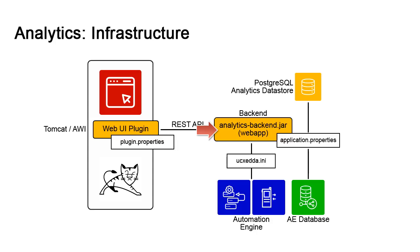The backend comes with a log for troubleshooting and two configuration files for connections. The first is the main file, application.properties, which contains connection details to the analytics database and the engine database. The other is ucxedda.ini, which contains the AE system host and port of the engine processes.